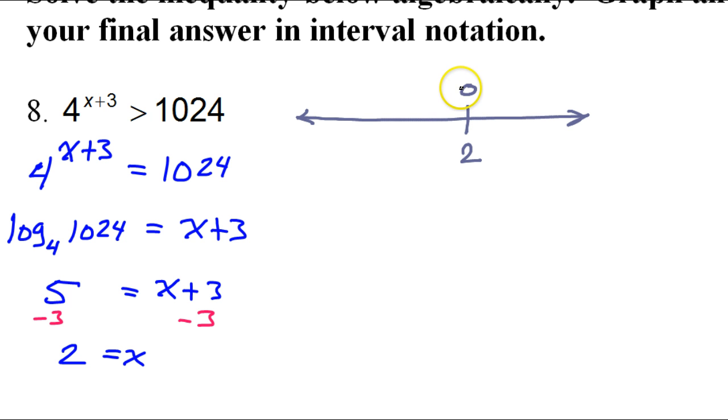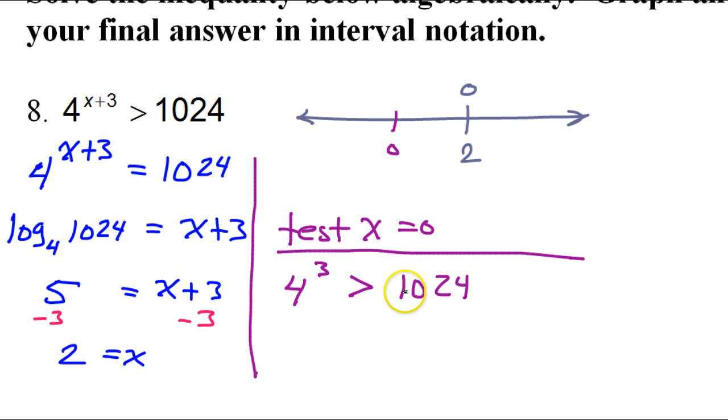So what we need to figure out is will the solutions go to the left from here or will they go to the right from here? And to figure that out, we will use test values. So when we have an exponential function, I like to use 0 a lot. So I'm going to use that as a test value. So let's test x equals 0. If I do that, then I've got 4 to the 0 plus 3 power. That's just 4 to the third power is greater than 1024. I'm just plugging in 0 right here into the original problem. And I know that that is just 64. 64 greater than 1024, no. That's false.